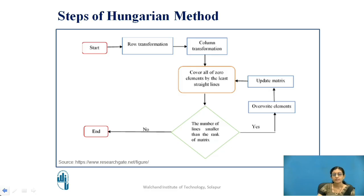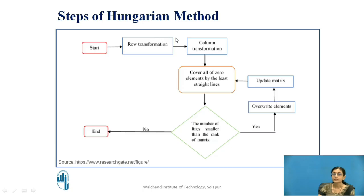Starting with the cost matrix, the first step is row reduction: we subtract the minimum element of each row from all elements in that row. The next step is column reduction: in each column, we identify the minimum element and subtract it from all other elements in that column.